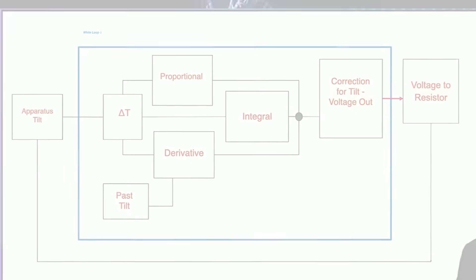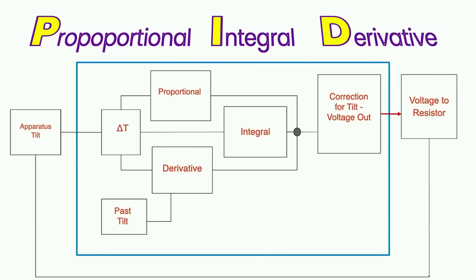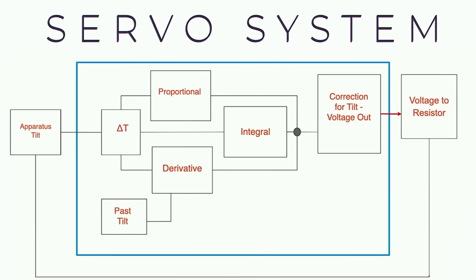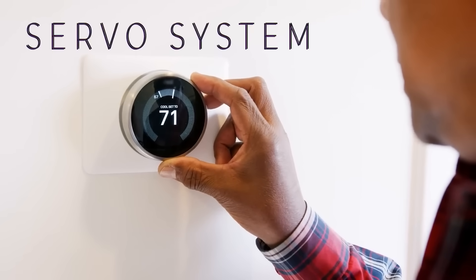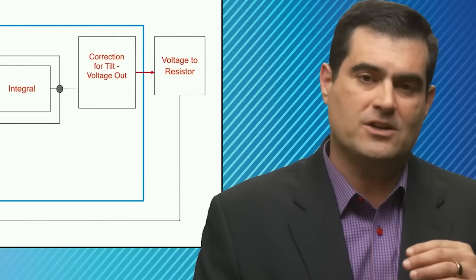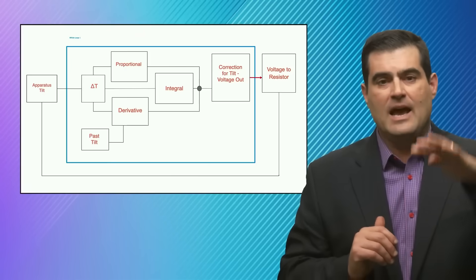Here's a block diagram schematic of how the compensation works—what's called a PID or proportional integral derivative control system. This is what's called a servo system that uses corrections and measurements like a thermostat does. It measures the difference between what you set the temperature at and what the room is actually reading, then applies heat or cold to compensate.